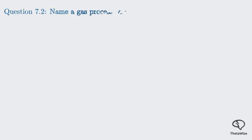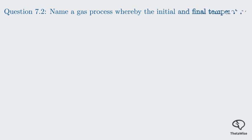Now let's look at question 7.2, which is worth one mark. It asks: name a gas process whereby the initial and final temperature are both constant. This question is a direct follow-up to our previous discussion.